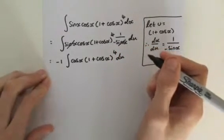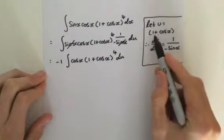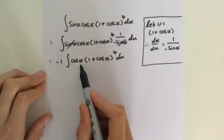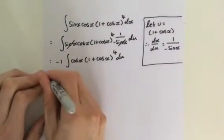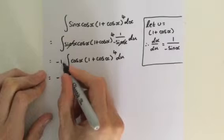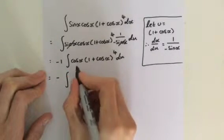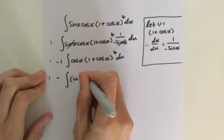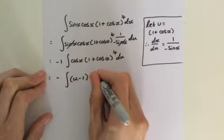We can take that minus 1 outside of the integral. So we get minus 1 multiplied by the integral of cosine x, multiplied by our 1 plus cosine x to the power of 4, du. Since u is 1 plus cosine x, cosine x in terms of u is going to be u minus 1. So we get minus the integral of u minus 1, then multiplied by u to the 4, du.